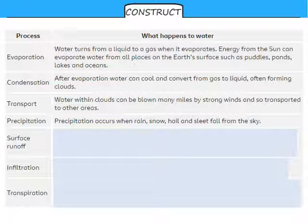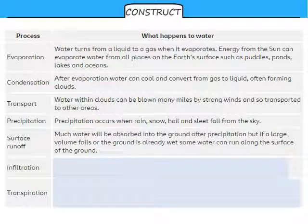This can lead to something called surface runoff. A lot of the water that falls during precipitation will be absorbed into the ground, but if a lot of water falls in one go or if the ground is already wet from previous rainfall, some water just runs straight along the surface of the ground. So surface runoff is water that has not been absorbed back into the ground and just moves across the top or the surface.